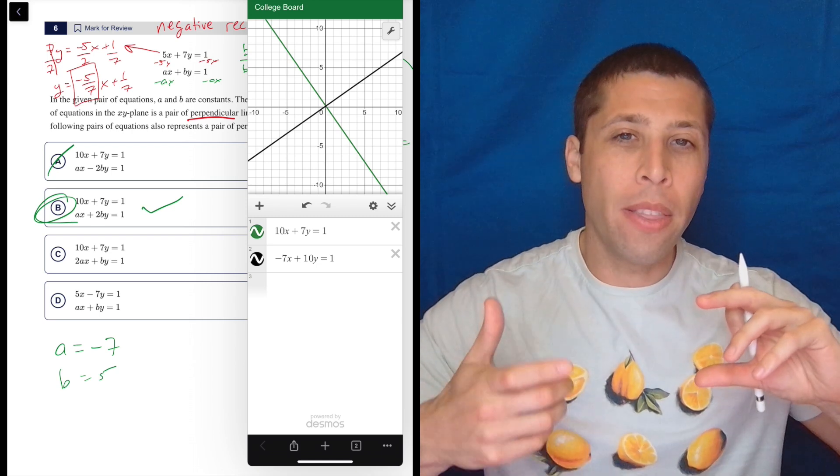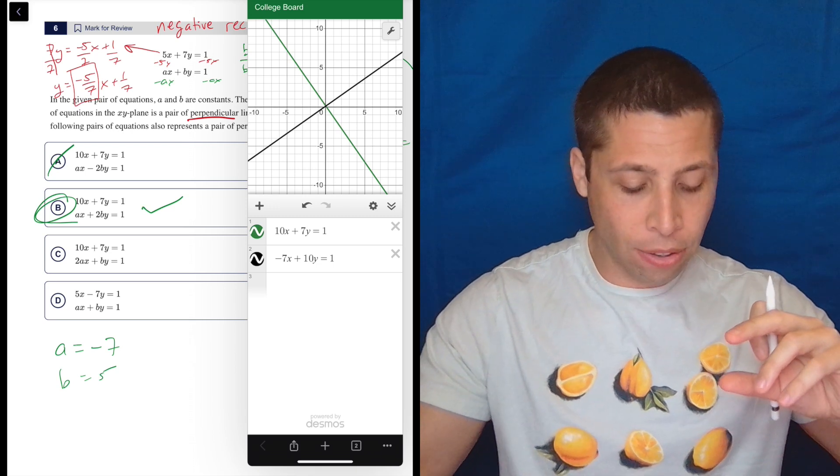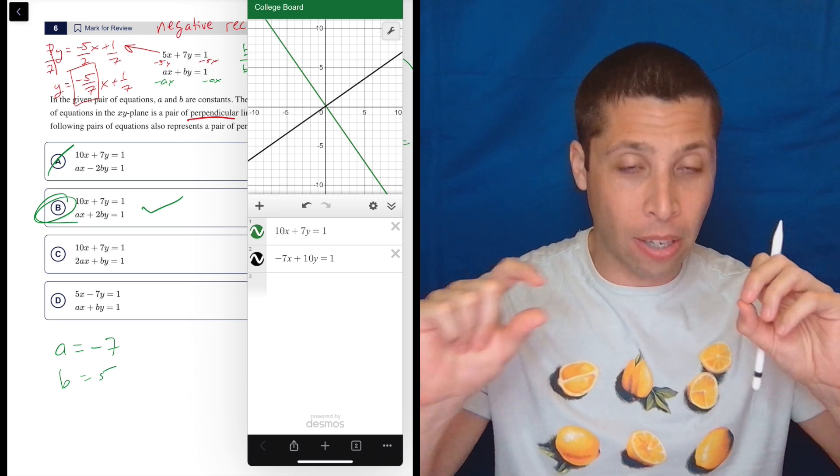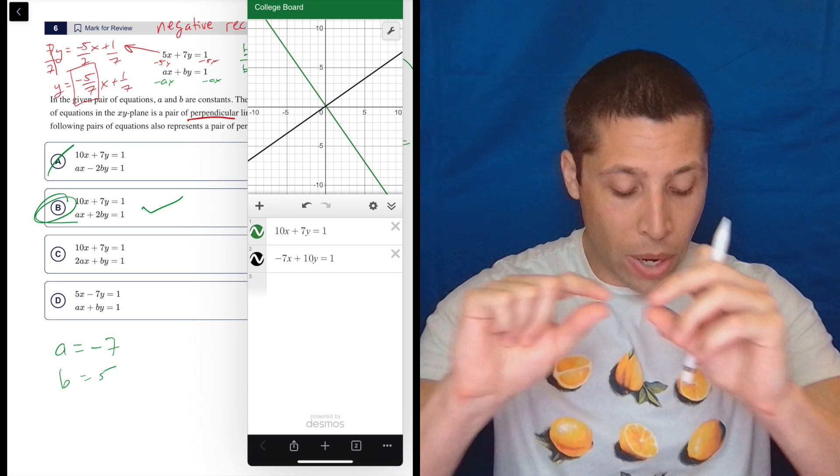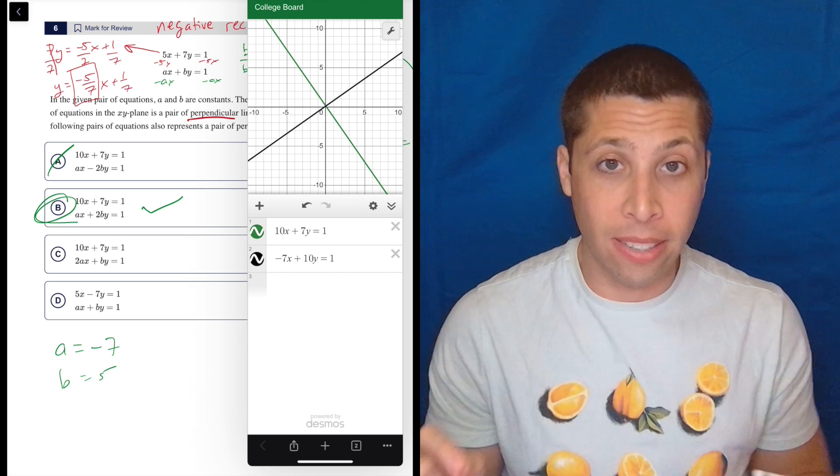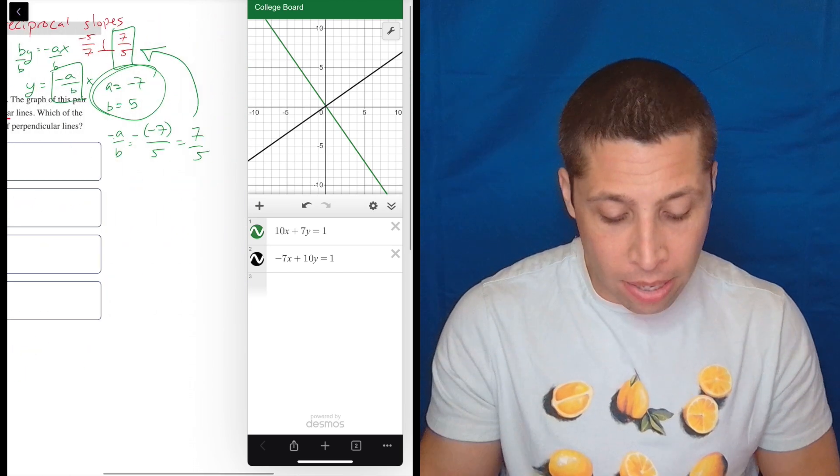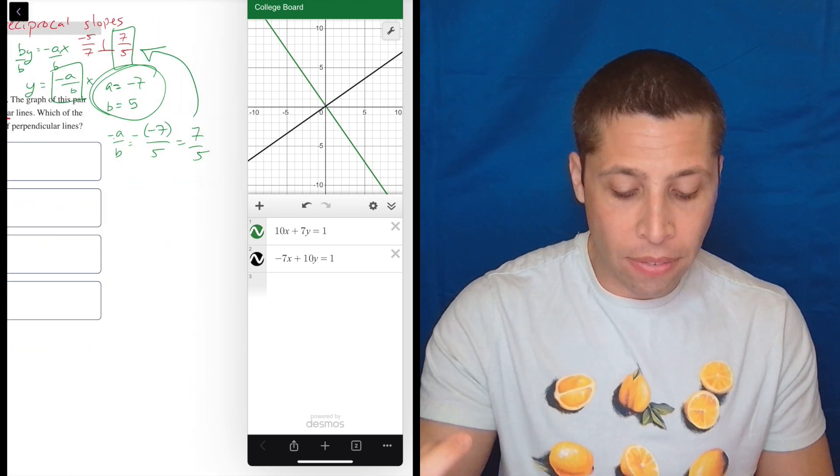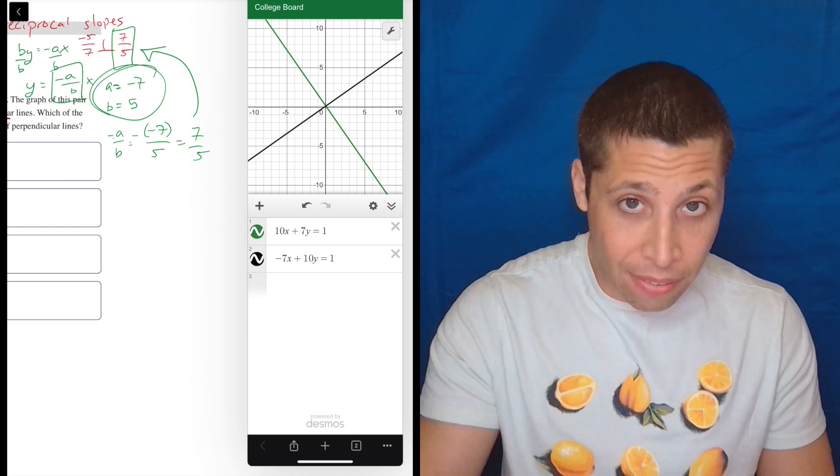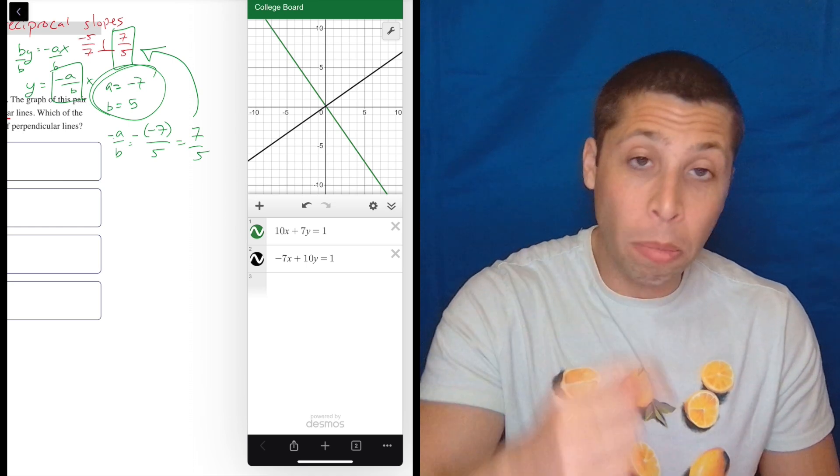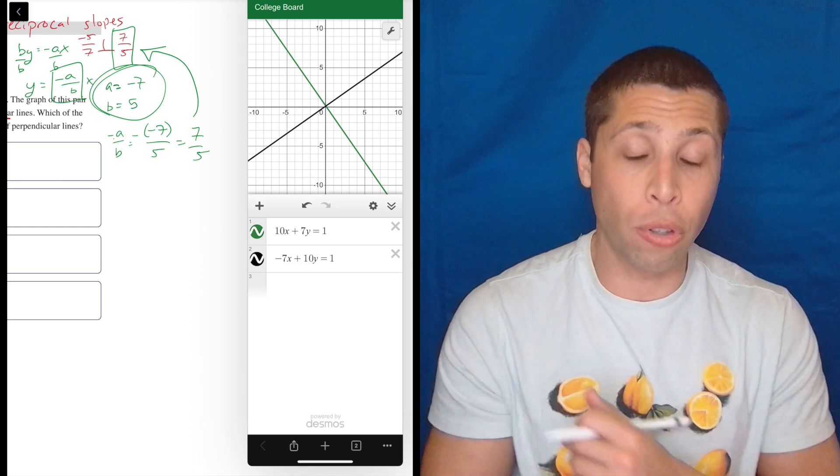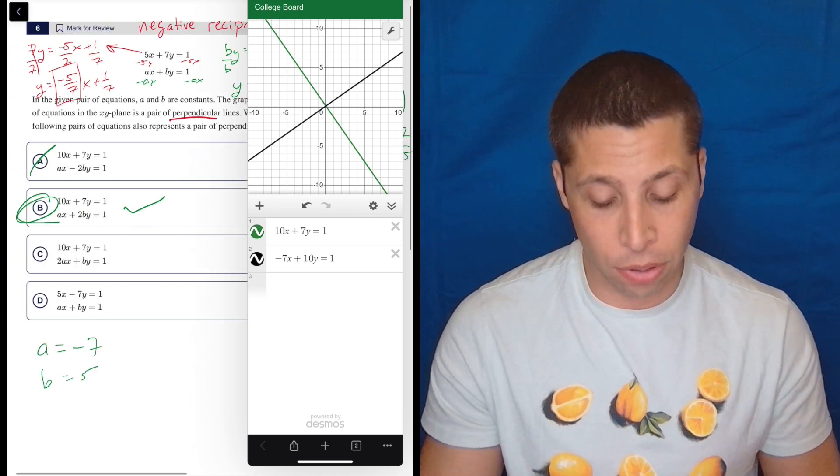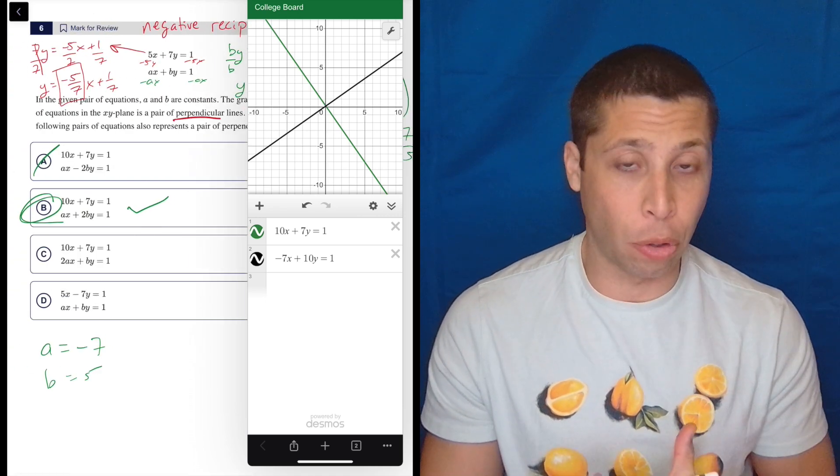We want to flip the fraction and negate it. And so what ends up happening is looking at the coefficients of the X and Y, we end up switching the position of the 10 and the 7 and one of them gets negated. And even if I had done instead of negative 7 and 5, if I had done 7 and negative 5, it still would be the same thing, that I'd have these numbers switched and one negative and one positive. So there is a little bit of a shortcut there.